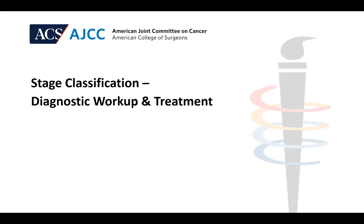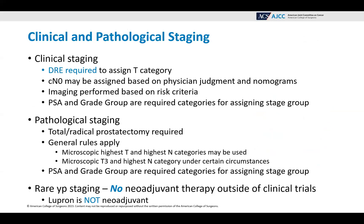Stage classification covers diagnostic workup and treatment — both clinical and pathological staging. For clinical staging, the DRE is required to assign the T category; CN0 may be assigned based on physician judgment and nomograms; imaging is performed based on risk criteria; and PSA and grade group are required categories for assigning the stage group. For pathological staging, a total or radical prostatectomy is required. General rules still apply: the microscopic highest T and highest N categories may be used, and there are exceptions where a microscopic T3 and highest N category under certain circumstances may be used. PSA and grade group are required for assigning the stage group.